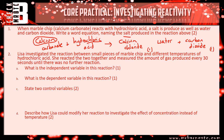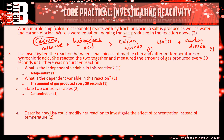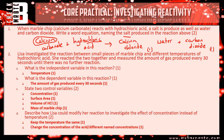Moving on to question two - the independent variable is the thing you've changed, which is the temperature. The dependent variable is the thing we've measured, which is the amount of gas produced every 30 seconds. Two control variables: make sure the concentration is the same, make sure the surface area is the same - you could also talk about the volume of the acid or the mass of the marble chip. Any two of those would have got you two marks. For Part D, describe how Lisa could modify her reaction to investigate concentration instead of temperature: keep the temperature the same, and change the concentration - I would have accepted different named concentrations such as 1 molar, 0.1 molar, etc.